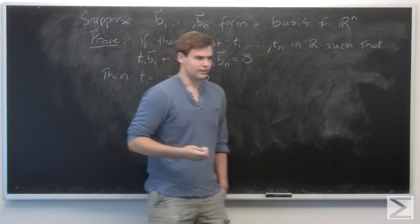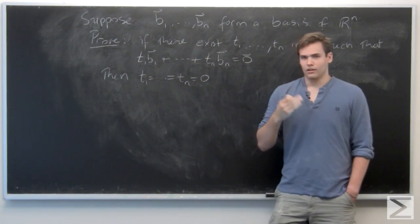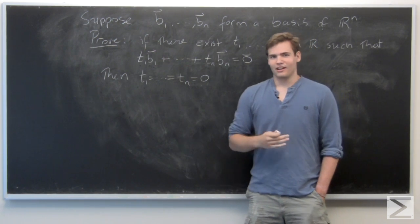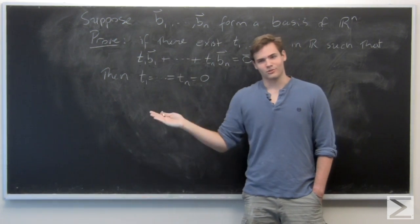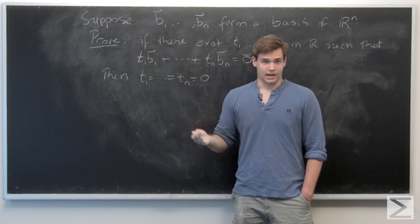So it basically gives, it reiterates the statement that 0 has a unique expression in terms of the basis vectors. And we're going to exploit this fact in the actual proof.